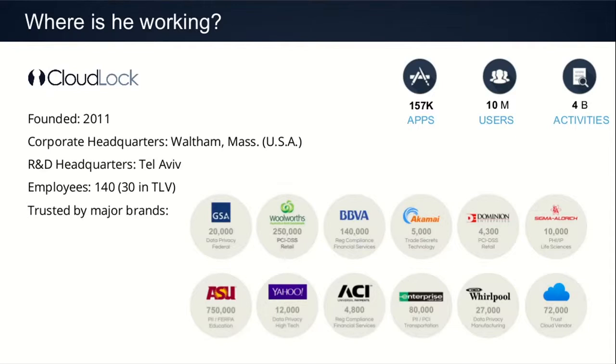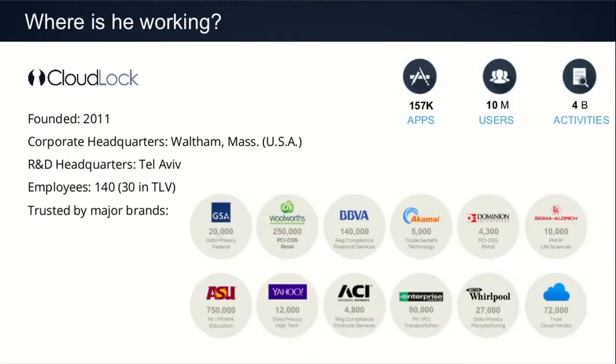I'm working with a small company called CloudLock — not so small actually, because we have more than 100 employees in the US, Ukraine, and here in Tel Aviv. We have a product for enterprises, specialized in cybersecurity in the cloud. Cloud is important because it's a different market than on-premise cybersecurity. We're dealing with scale: more than 150,000 apps, more than 10 million users we're monitoring, and more than 4 billion user activities we monitor to find suspicious activity.